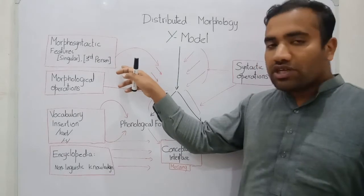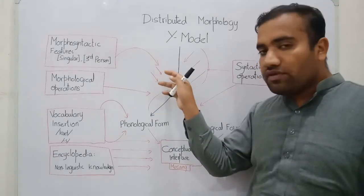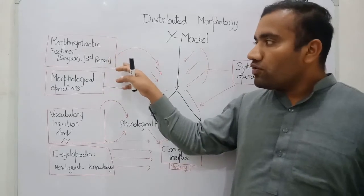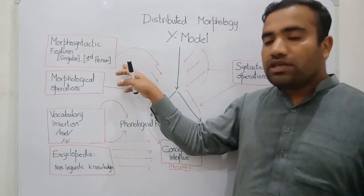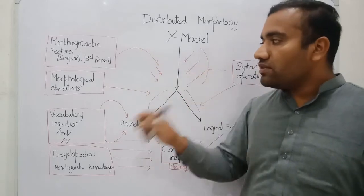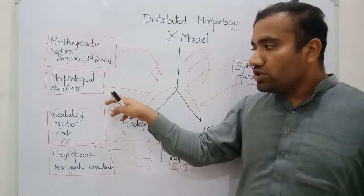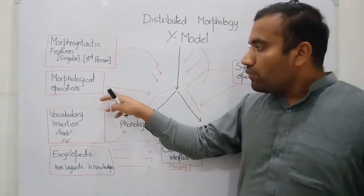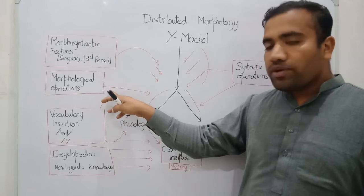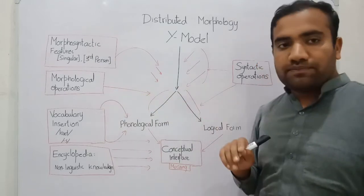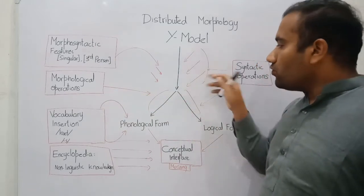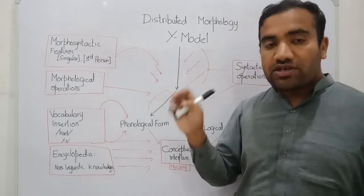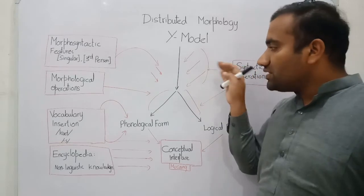First, the morphosyntactic features are added into the derivation. After that, when the morphosyntactic features have been added in the derivation, then the morphosyntactic operation will apply. At this level we apply the syntactic operation on the morphosyntactic features, and here we apply the syntactic operation.